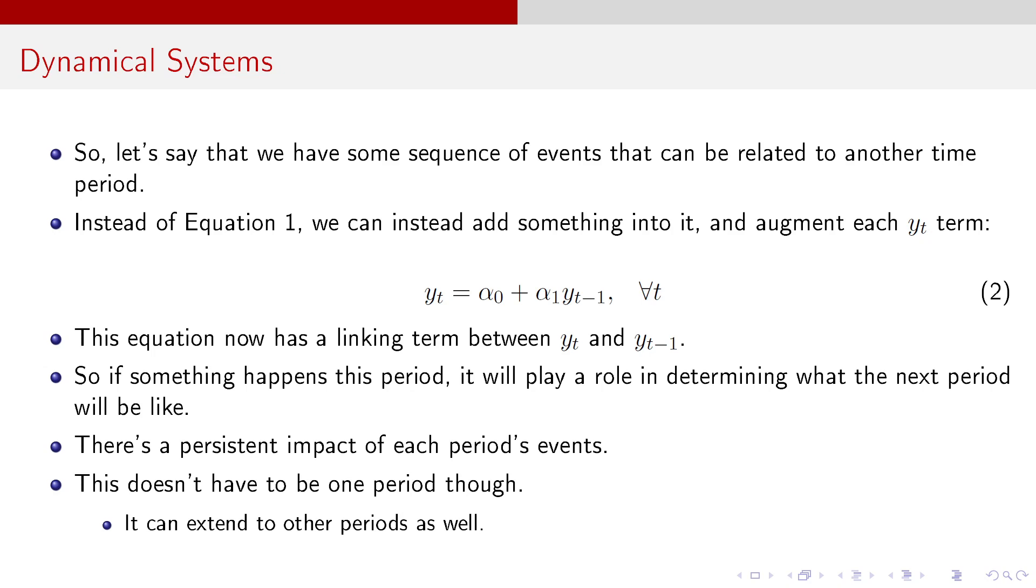So let's say we've got a sequence of events, but they can be related to other time periods. So instead of what you just saw in equation one, you could take each Y_t and augment it by saying that Y_t equals alpha naught plus alpha one times Y_{t-1} for all T. Well, this equation now has a linking term between Y_t and Y_{t-1}. So if something happened in period t minus one to Y, then it's going to affect Y_t today. This is that intertemporal link that I was talking about. Think of it as a measure of persistence of each period's events.